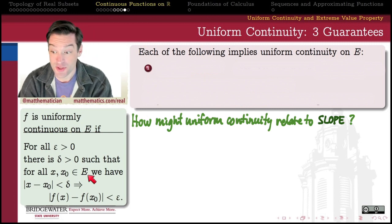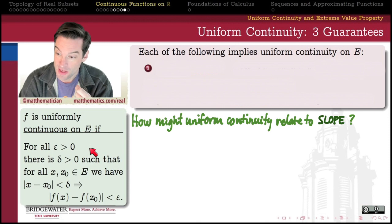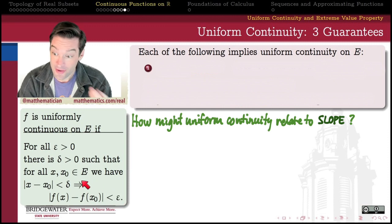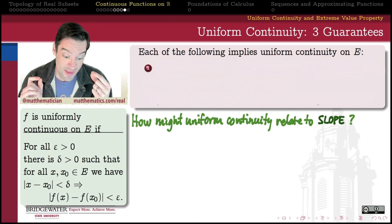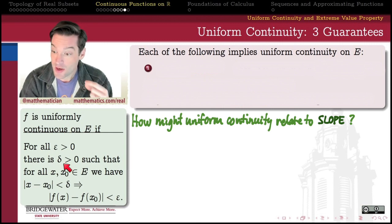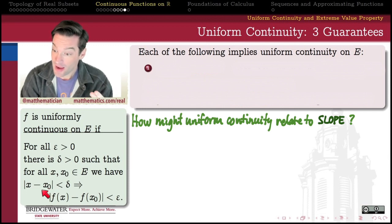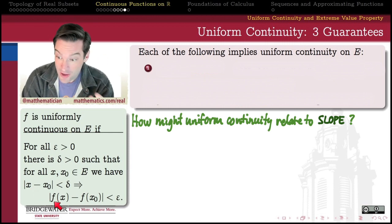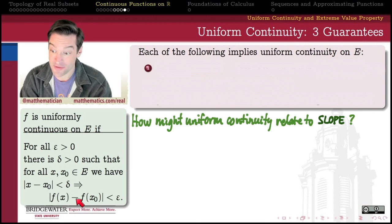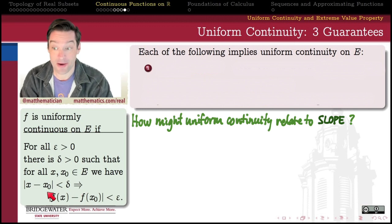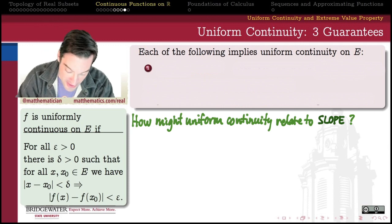Let's take another look at the definition of uniform continuity. f is uniformly continuous on domain E if, for all epsilon you pick, I can find a delta such that for any two points in my domain that are delta-close to one another, their images are epsilon-close. It's this 'for all points in the domain' piece that makes uniform continuity special — we pick delta before picking the arbitrary points. Looking more closely, I see a difference in x-values (something like a 'run') and a difference in f(x)-values (something like a 'rise'). If I divide one by the other, I get something resembling a slope.